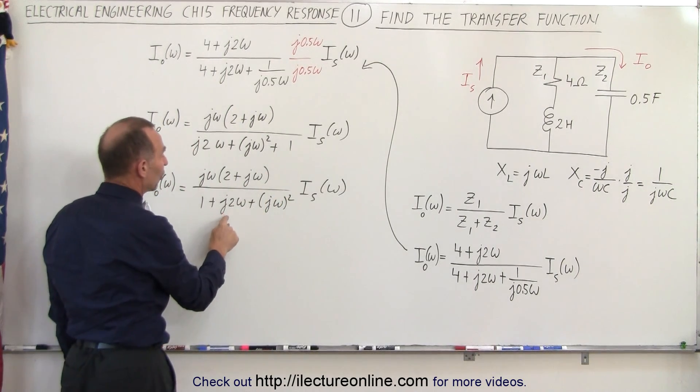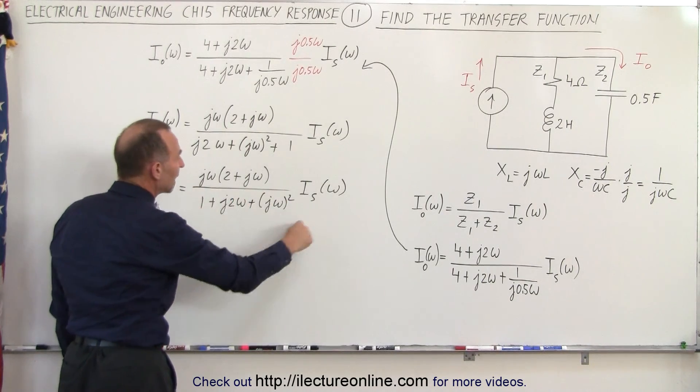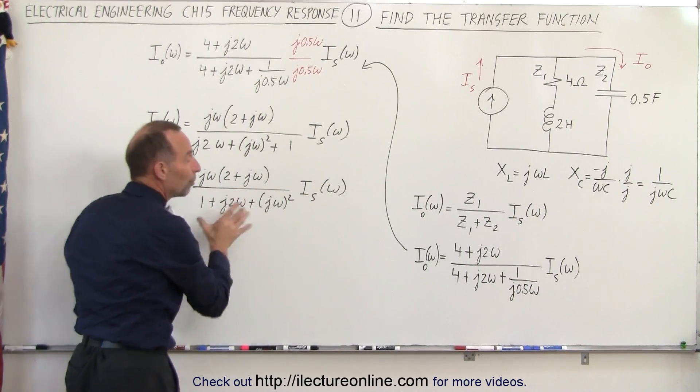And then here we found that when J omega was equal to negative 1, that made the denominator 0, and therefore that's where the poles were.